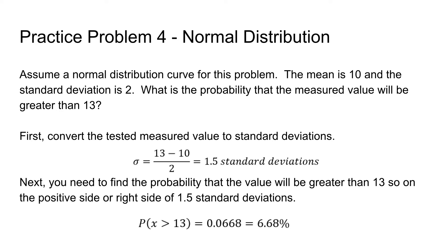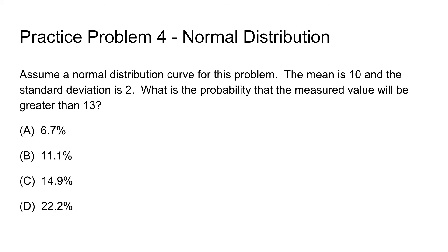From that table, you will see that you get a value of 0.0668. This means that the probability that the measured value will be greater than 13 is going to be 6.68 percent. So our correct answer is going to be A, 6.7 percent.